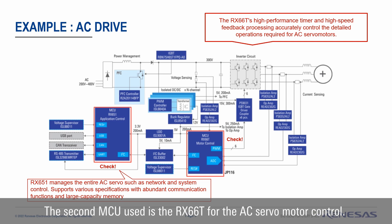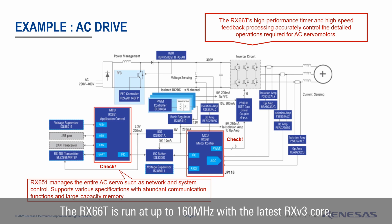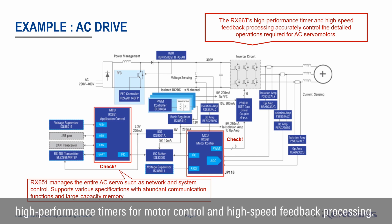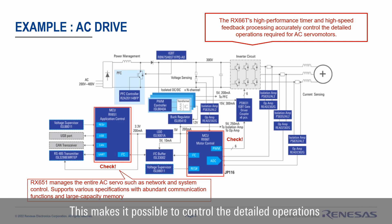The second RX MCU used here is the RX66T for the AC server motor control. The RX66T runs at up to 180MHz with the latest RX core. It has a register bank function for real-time control, integrated with a high-performance timer for motor control and high-speed feedback processing. This makes it possible to control the daily operations required for AC server motor control at high speed and accuracy.